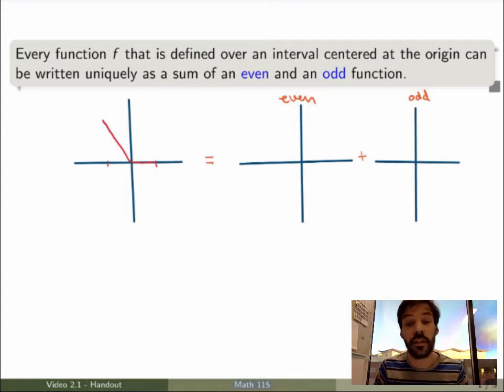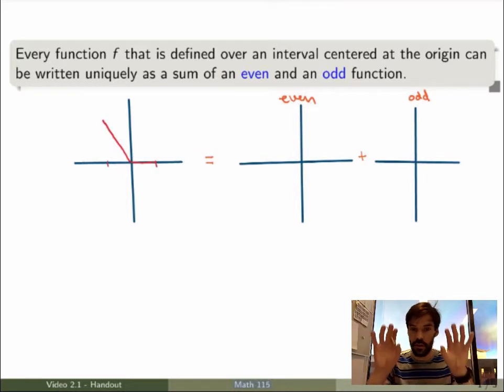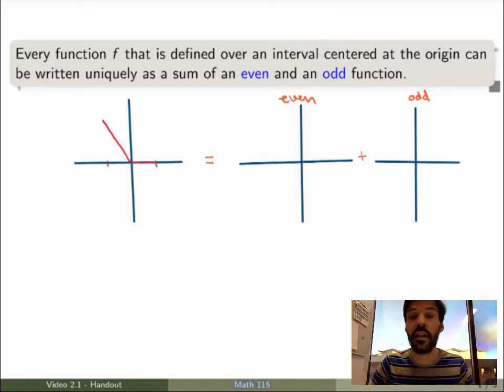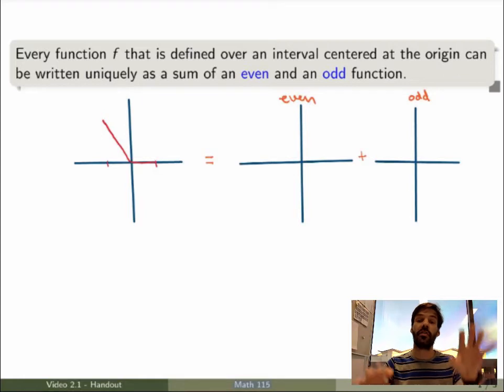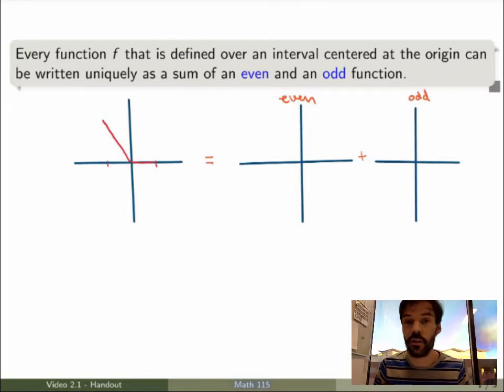Now the statement is that for any such function it can always be written uniquely as a sum of an even function, so that's a function which looks the same on both sides of the y-axis, and an odd function which is a function which looks the same but has opposite sign on both sides of the y-axis. And that is always true, that can be done for any function f.